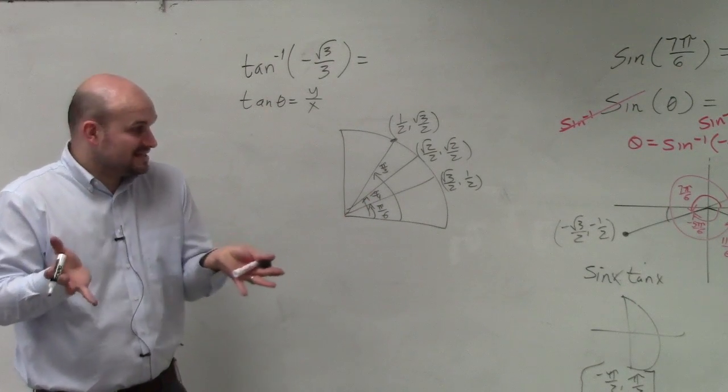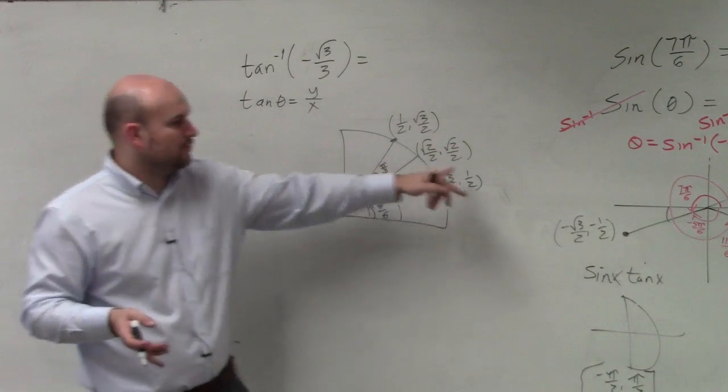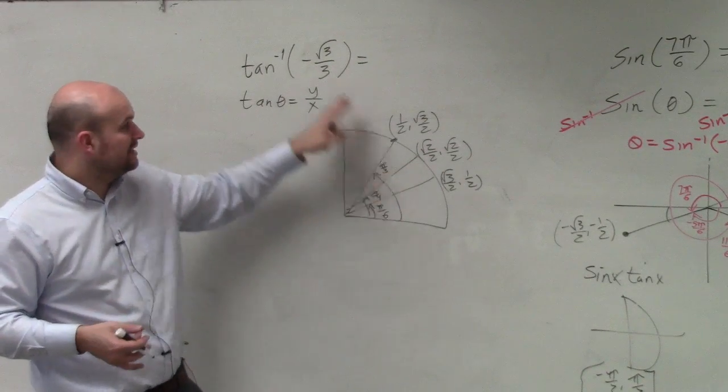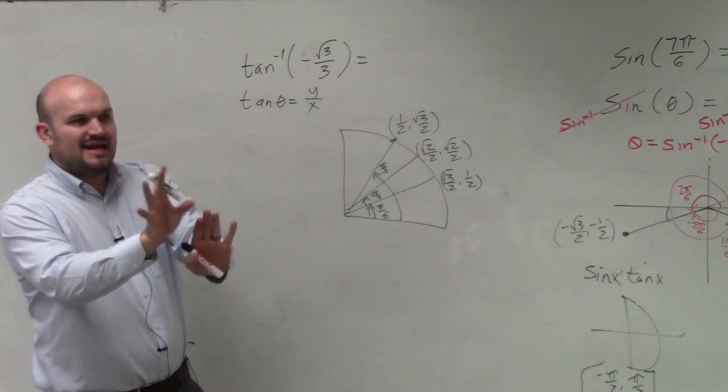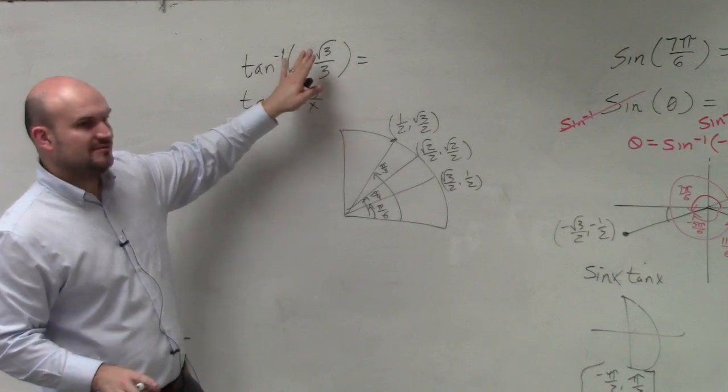So what they're basically asking us is which one of these angles, when you take the y-coordinate over the x-coordinate, gives us negative square root of 3 over 3. Now again, forget about the negative for a second. Let's just deal with positive for a second, right?